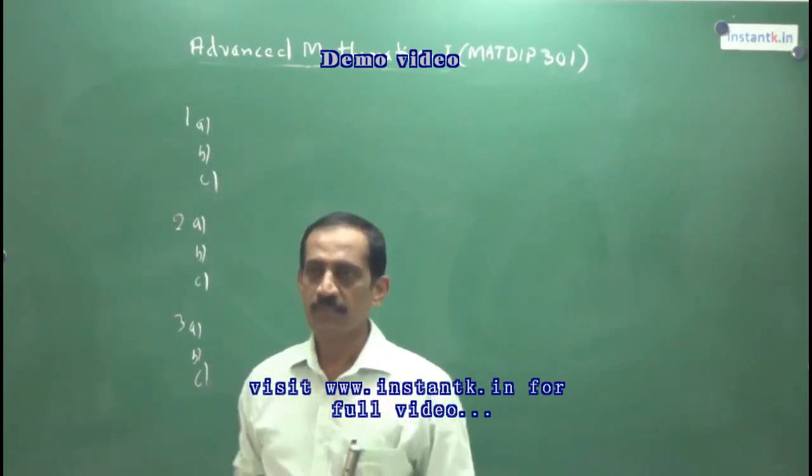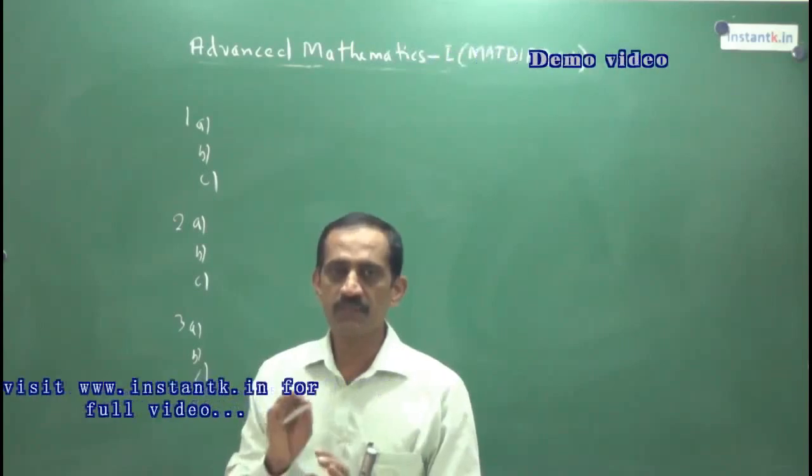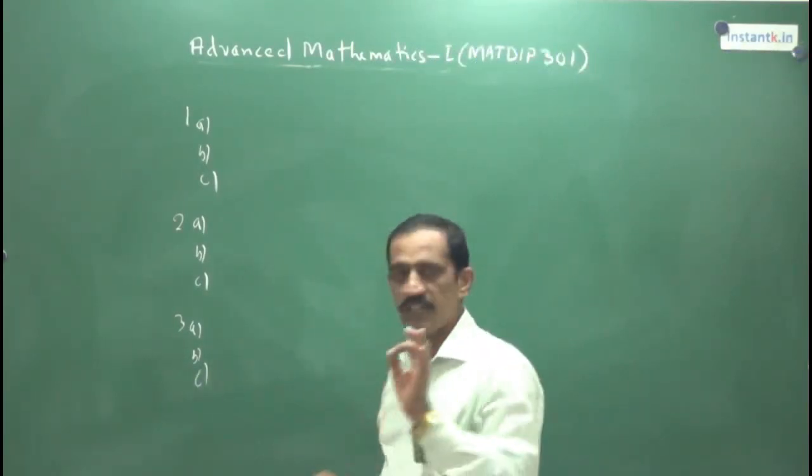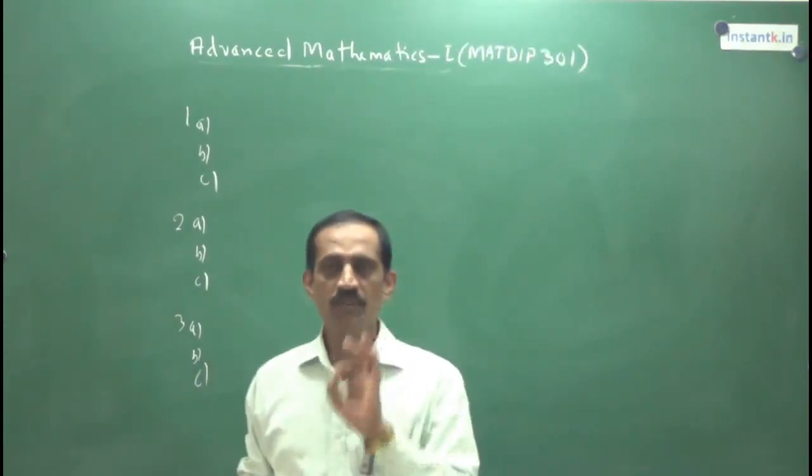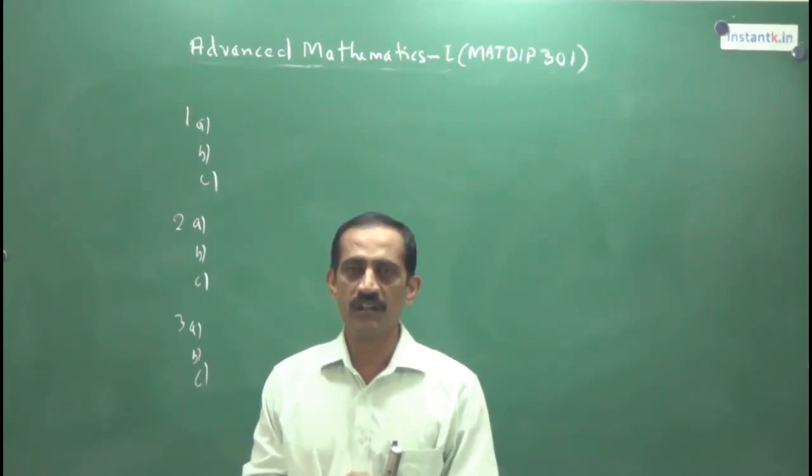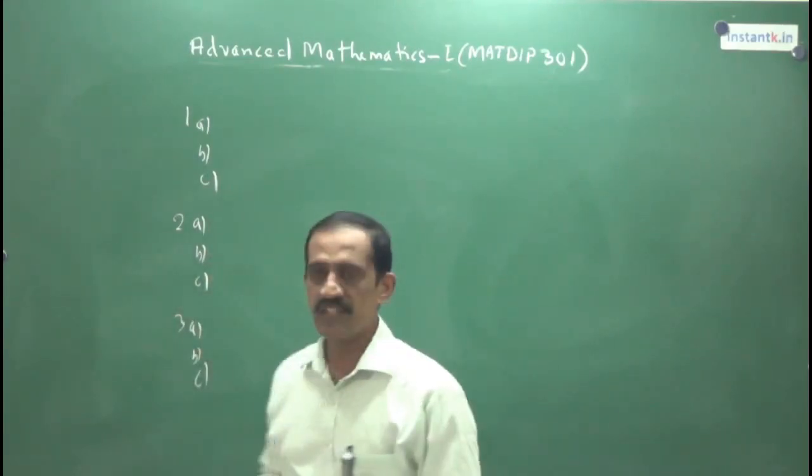Now here, we prepared one CD in which we completed that 5 questions. So, for 100 marks, 5 into 20 means 100 marks. For 100 marks, we prepared one CD.